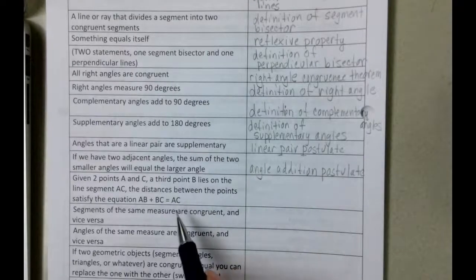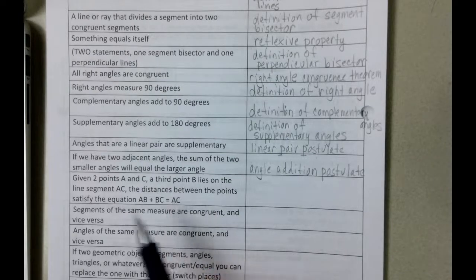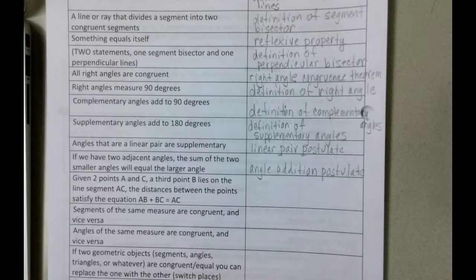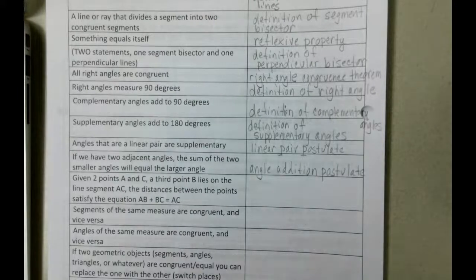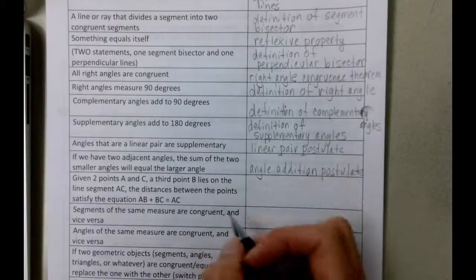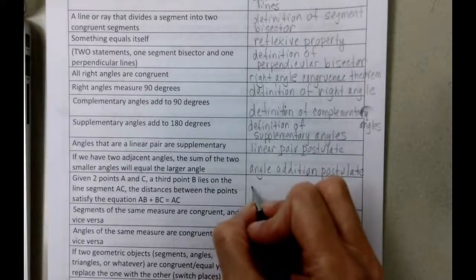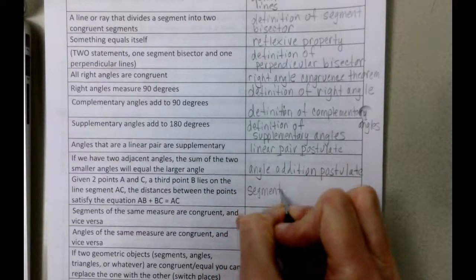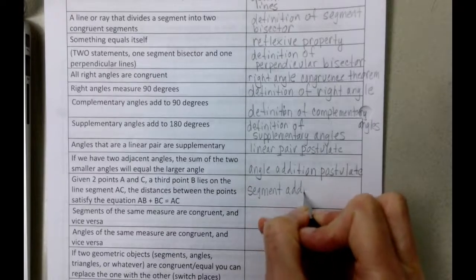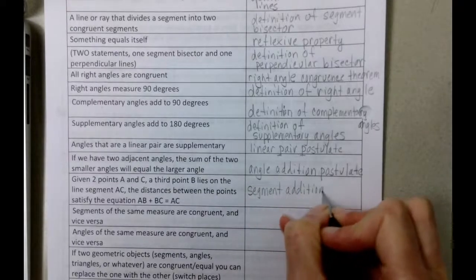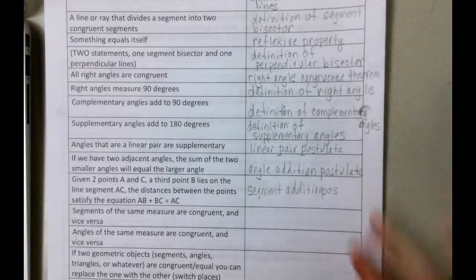Same idea here on the next one. Given two points A and C, the third point B lies on line segment AC, the distances between the points satisfy the equation AB plus BC equals AC. That is a wordy way of saying the segment addition postulate.